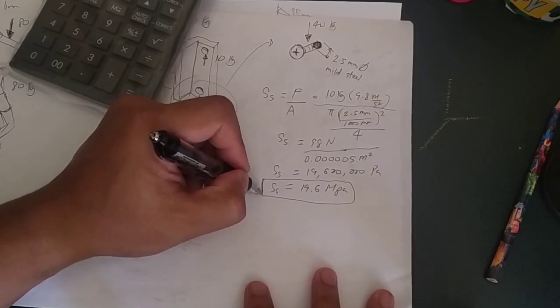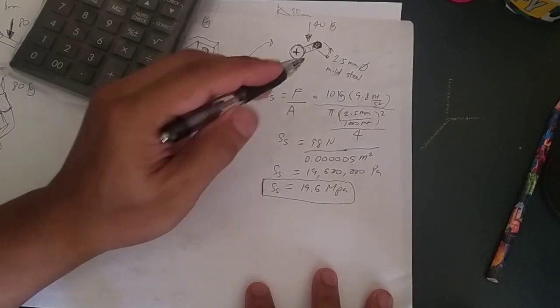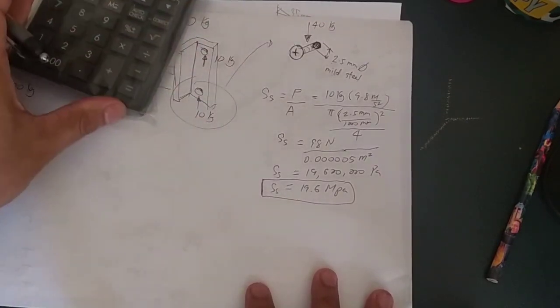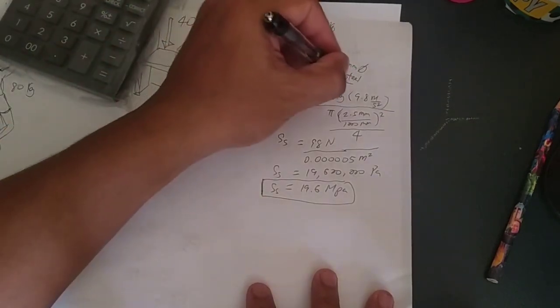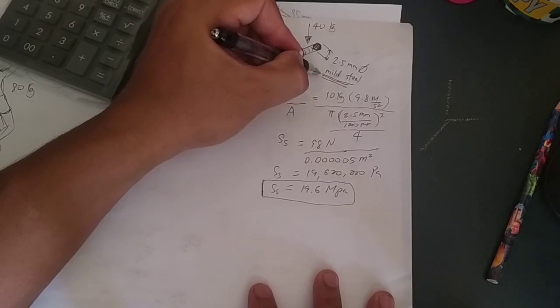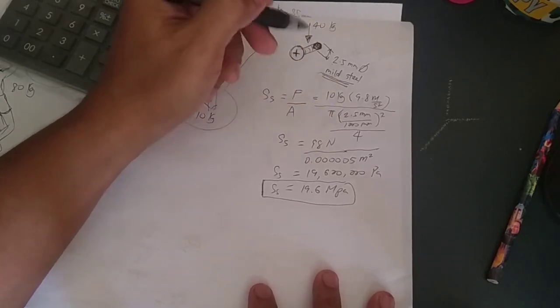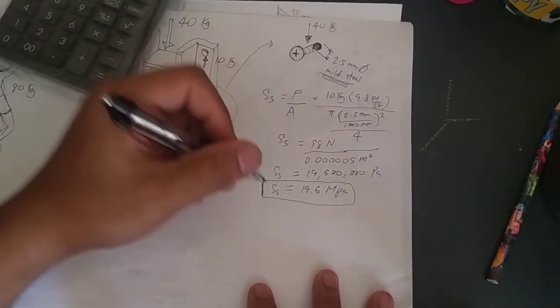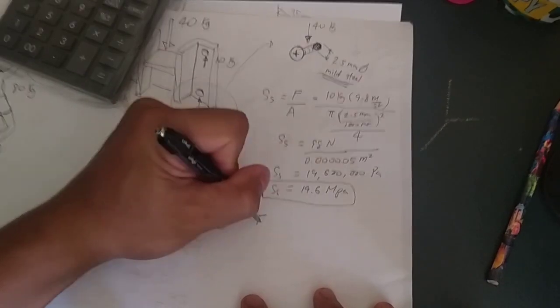Now we have to compare the shear stress of the screw to the tensile strength of the screw. So the tensile strength can be determined given the material of your screw. In this particular case it is mild steel.